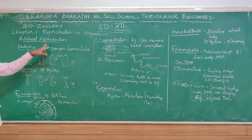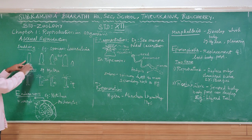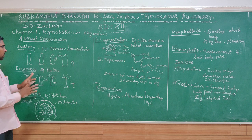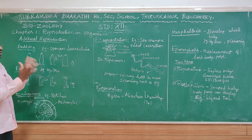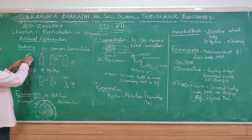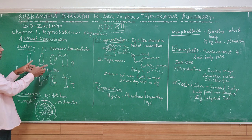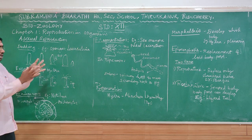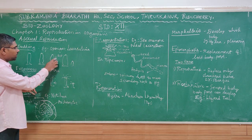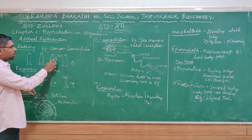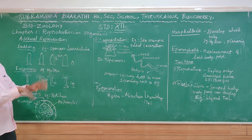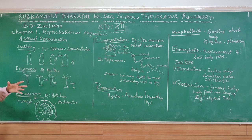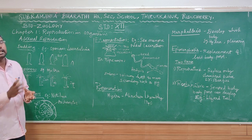How does the budding mechanism happen? Looking at an adult sponge, you can see that a small part of the body grows out — that part is called the bud. The bud develops into a young individual. This mechanism is called budding.